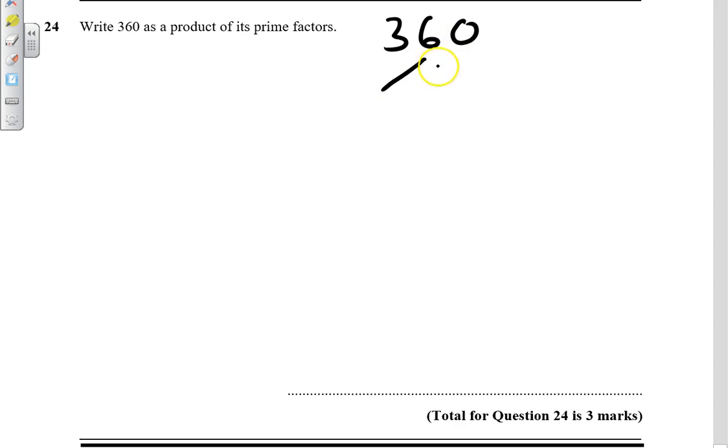We've got a multiple of 10 so I'm going to go for 10 and 36. These two multiply together to give that. Now 10 can be split into 2 and 5 which are both prime numbers so stick a square around it.